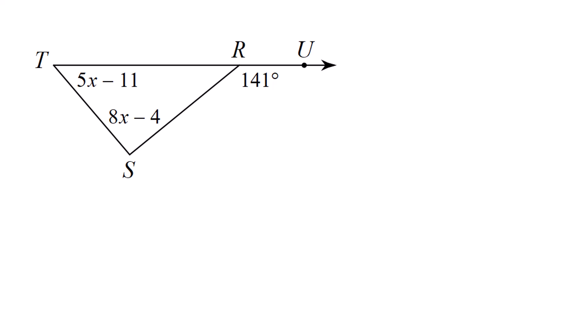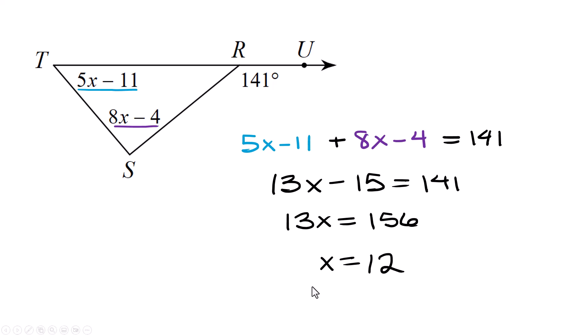I'm going to use the exterior angle theorem. Again, this is what I know. The 5x minus 11 plus the 8x minus 4 has to equal that 141. These two angles away from that exterior angle will always equal what this is. Once you have this written up, that's the geometry. Now the rest of this is algebra. Let's combine like terms. 5x and 8x is 13x. The negative 11 and the negative 4 is negative 15. That is still equals 141. Add 15 to both sides, I got 156. So I got 13x equals 156. We are going to divide by 13 now and we end up with x equals 12.